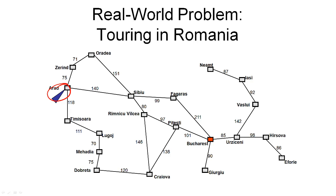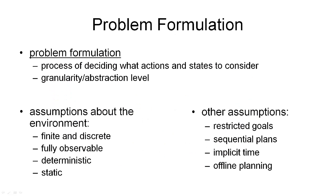As a side remark, the Touring in Romania problem is taken from a famous AI textbook by Russell and Norvig. And if you want to learn more about search, I recommend that you have a look at this book. The reference to this book will be given on the course website.